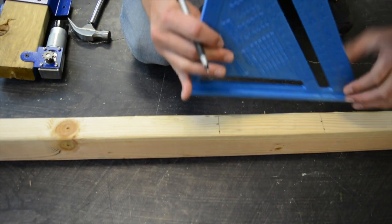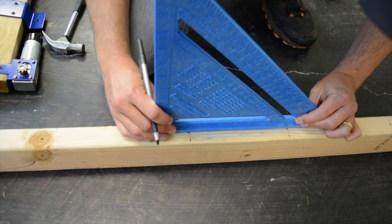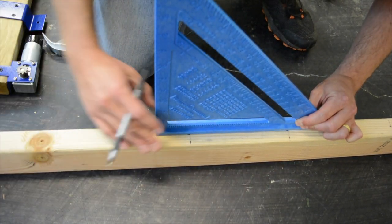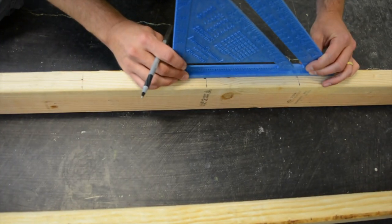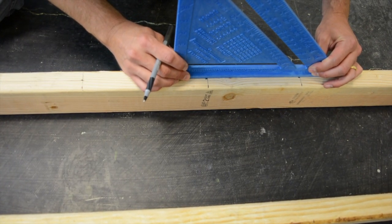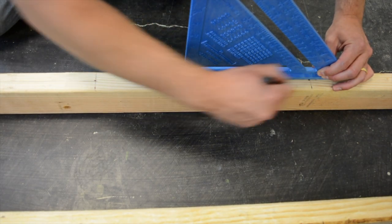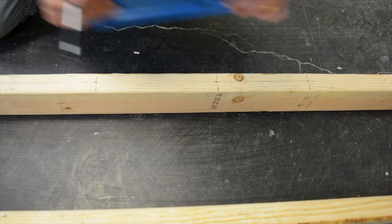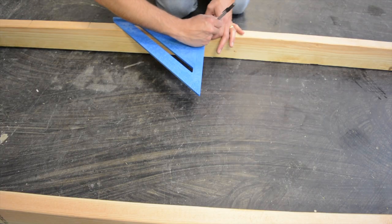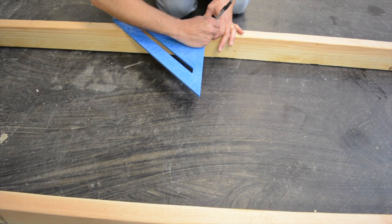Then we're going to align our speed square with those marks and draw a straight line between them, just like we're doing here. So you have a perfect intersection on these two points of the center of your vertical frame legs and our marks. Repeat that on the other side, and we'll be ready for the next step.